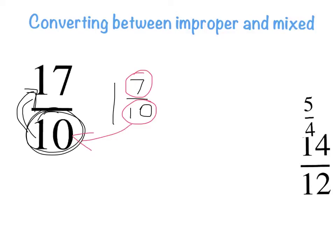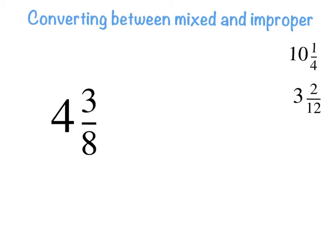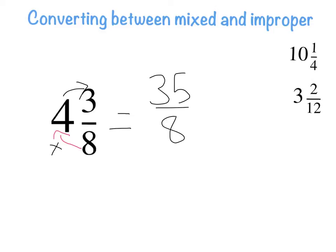Now let's go the reverse way — converting a mixed numeral into an improper fraction. There are a few steps. First, multiply the denominator by the whole number: eight times four is thirty-two. Then add the numerator: thirty-two plus three is thirty-five. So it becomes thirty-five over eight. Multiply first, then add the numerator to get your new number.